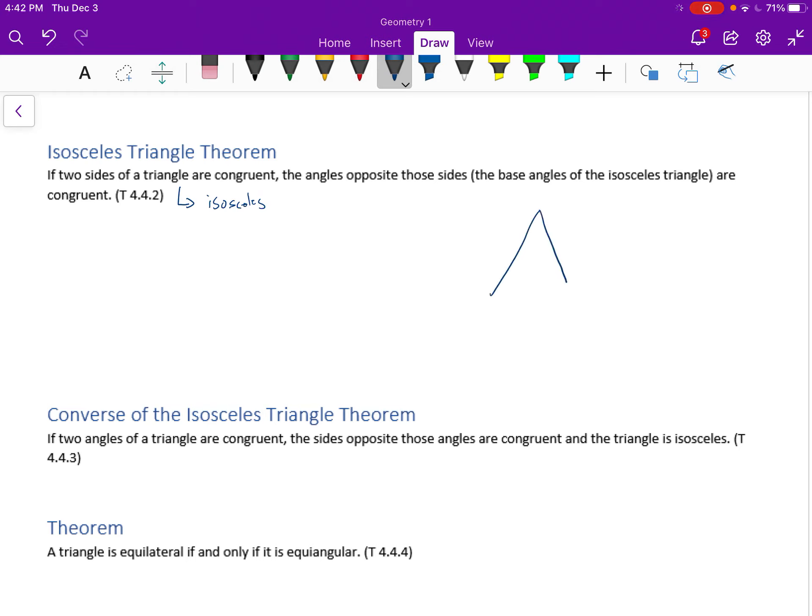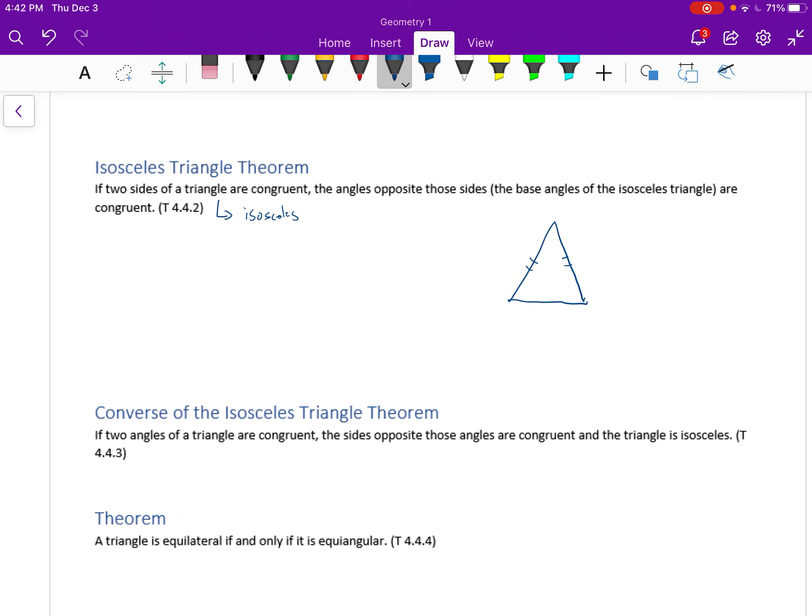When we look at these triangles, obviously it looks to be true, but we never really showed that it was true. But we have, if it's an isosceles triangle, those two sides are congruent, means that the angles opposite have to be congruent as well. So angle A has to be congruent to angle B.